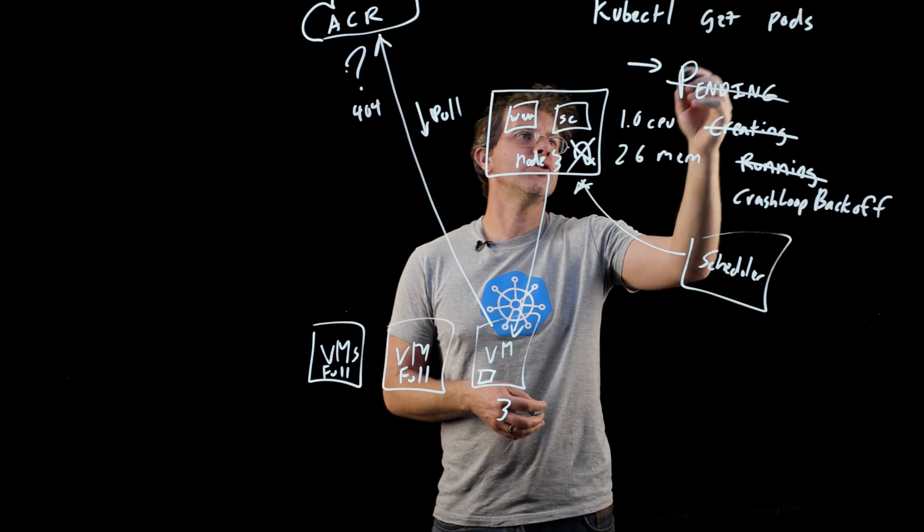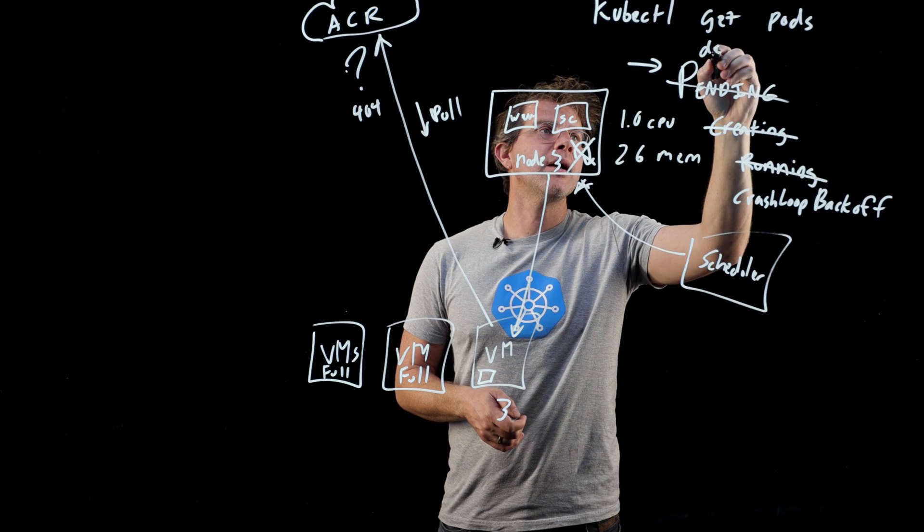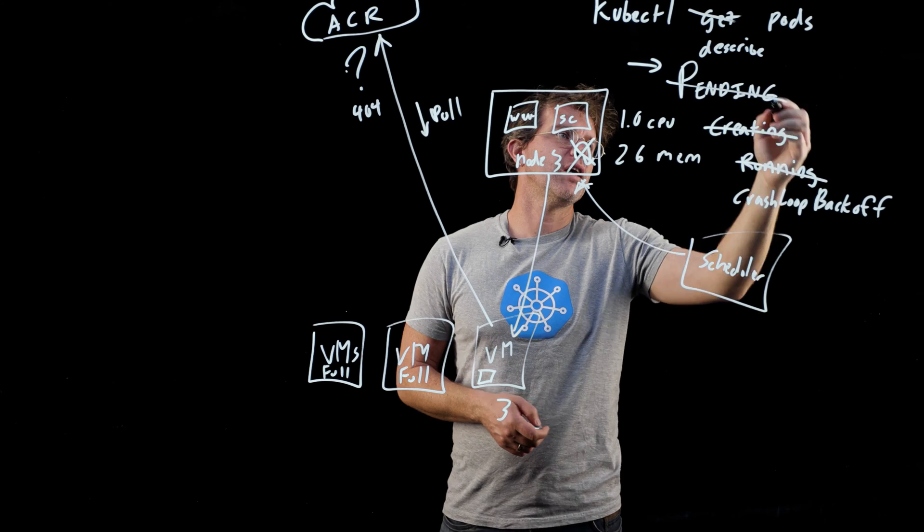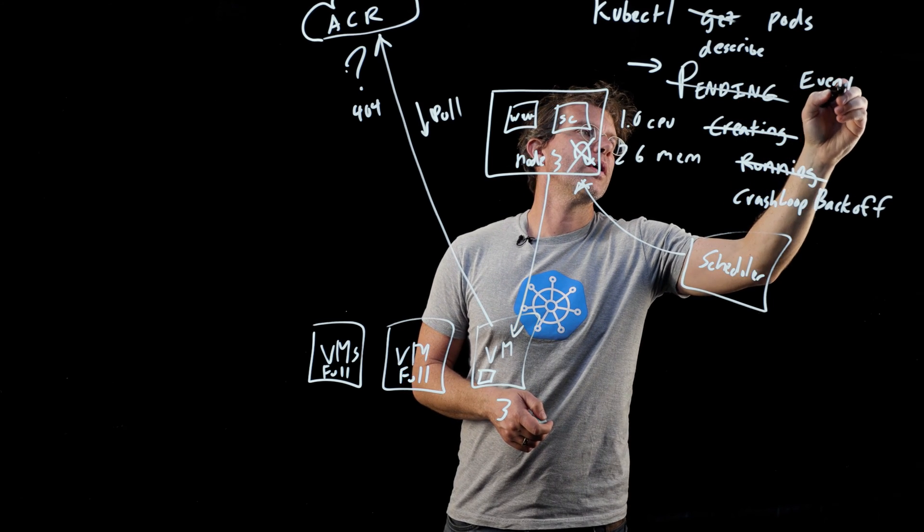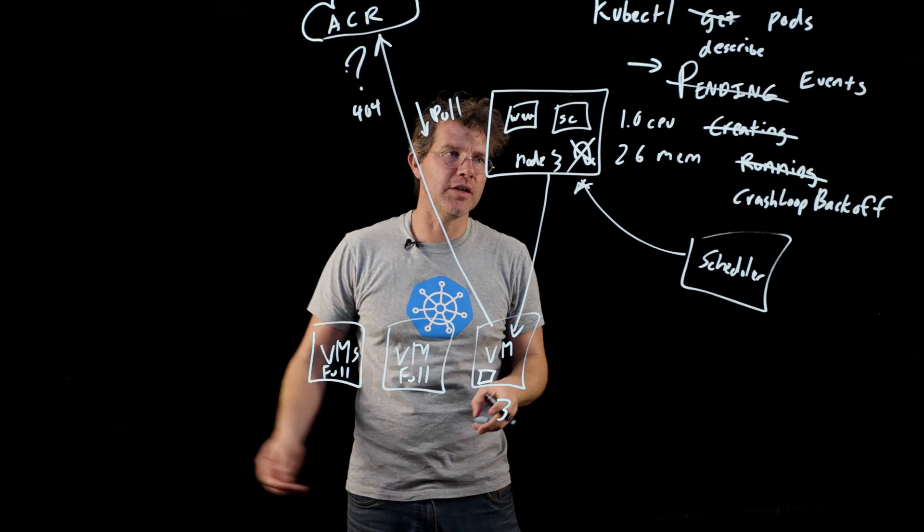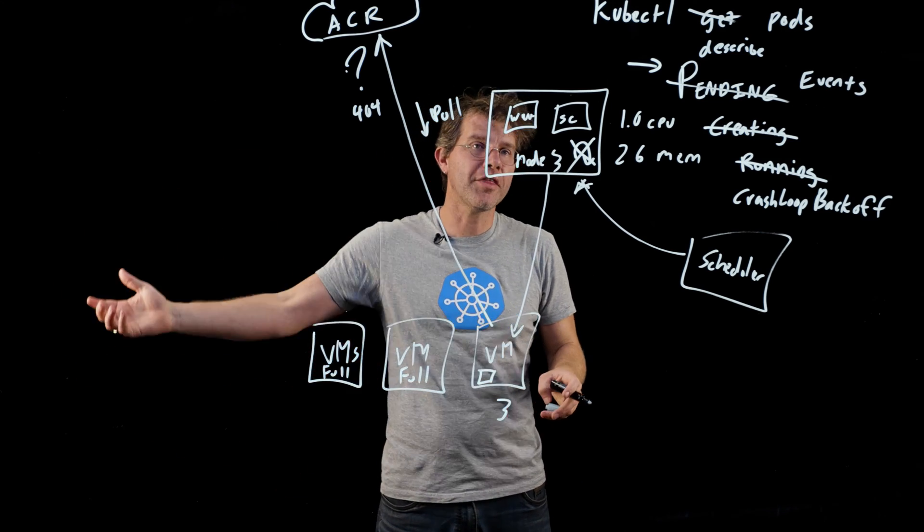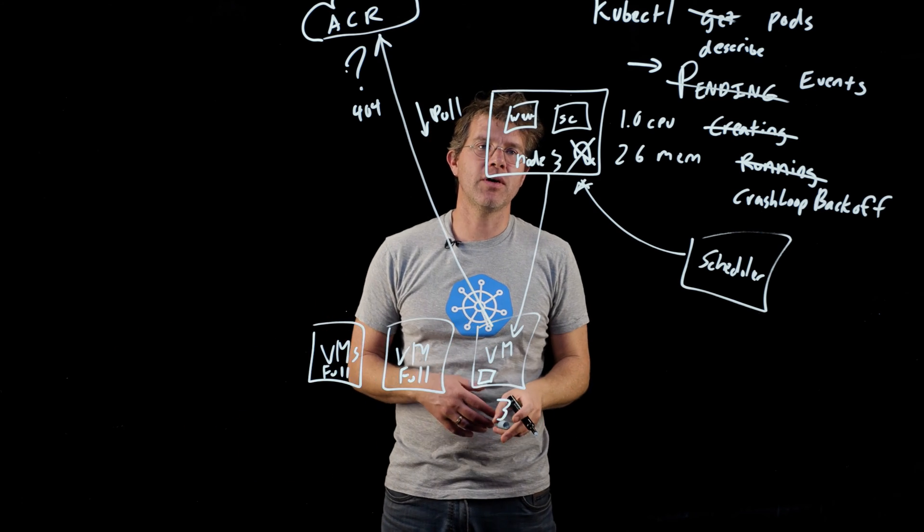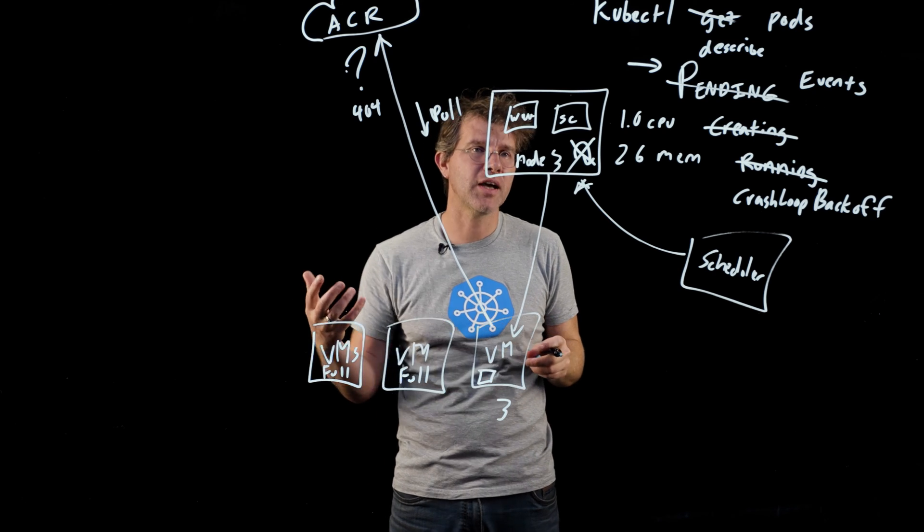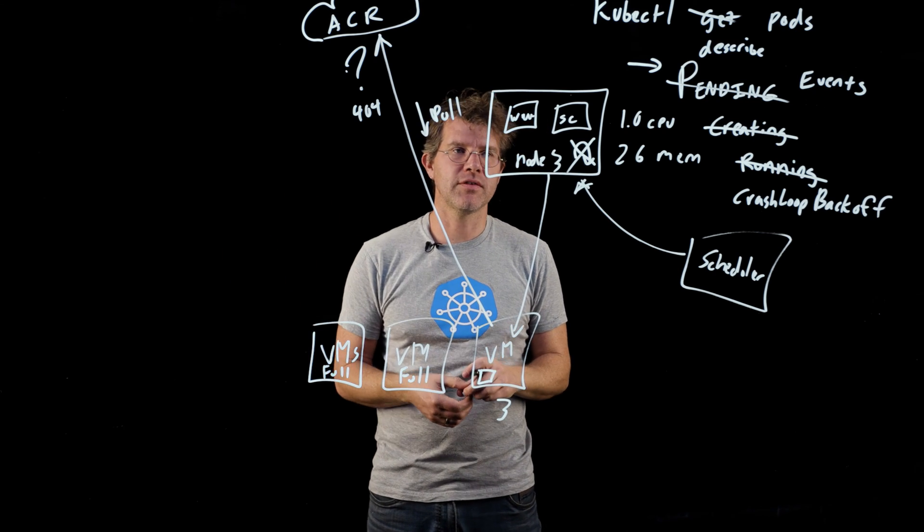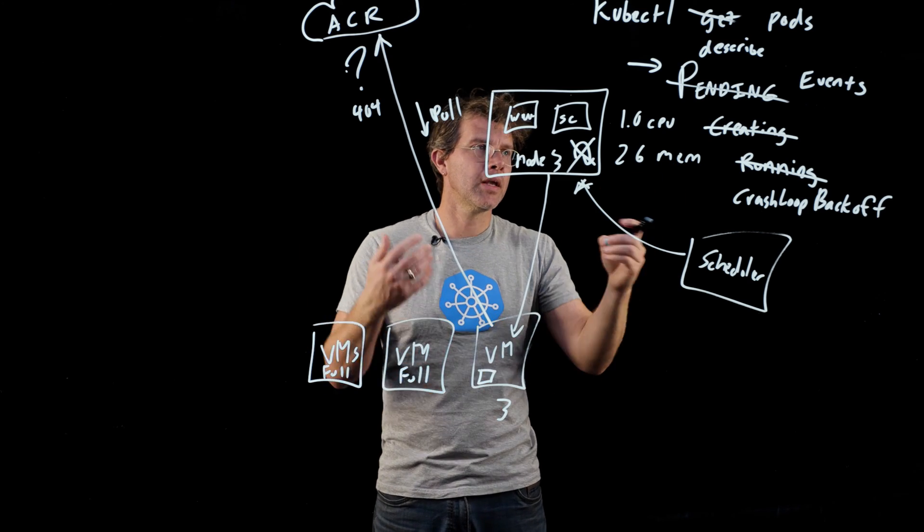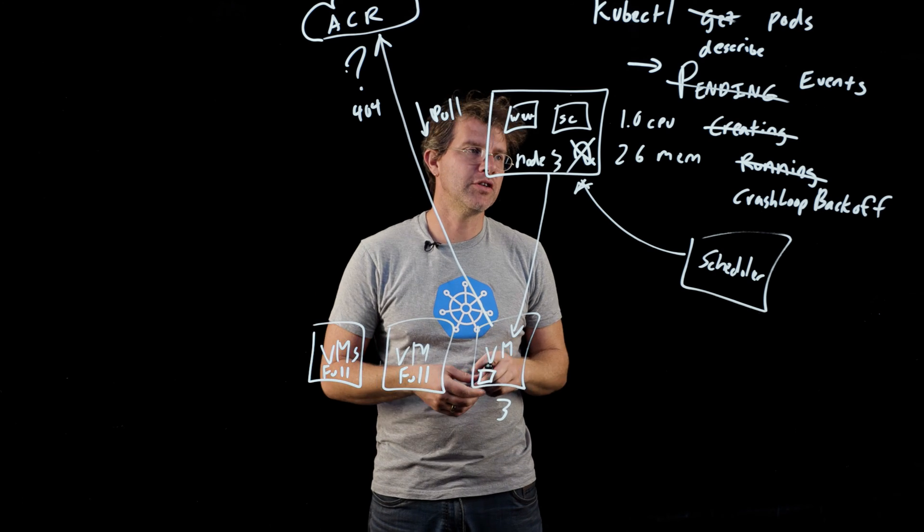Again, if you do a kubectl get pods, you may not see this. But if you do a kubectl describe, you'll get all of the events associated. So you'll see the events that are associated with this particular pod. And in there, you'll see something like tried to pull image, failed to pull image. Sometimes this happens if you're not authorized. Sometimes it happens if you have a typo in the image name. Kubernetes itself doesn't check with the repository ahead of time before it schedules the container to make sure that the image is available. So if you see things that are stuck in creating, it's usually because there's some degree of problem with the image itself.